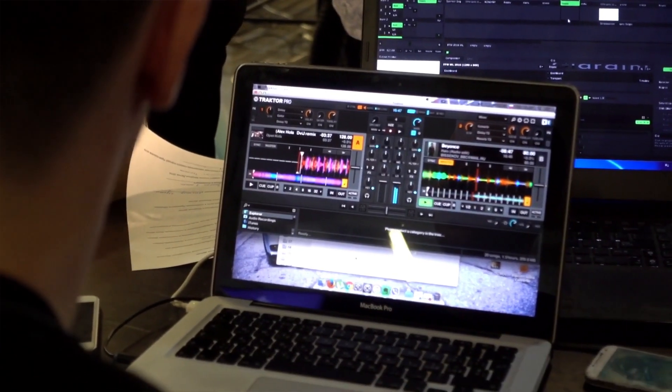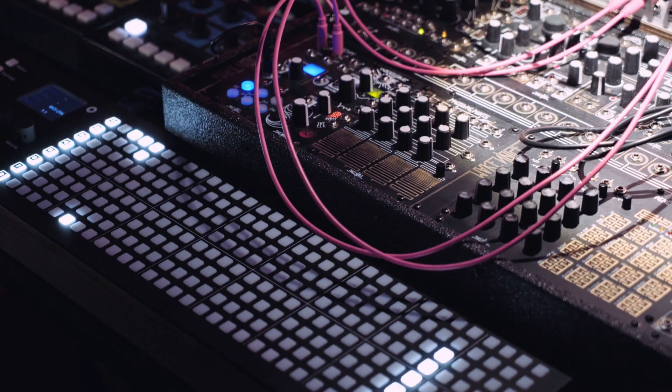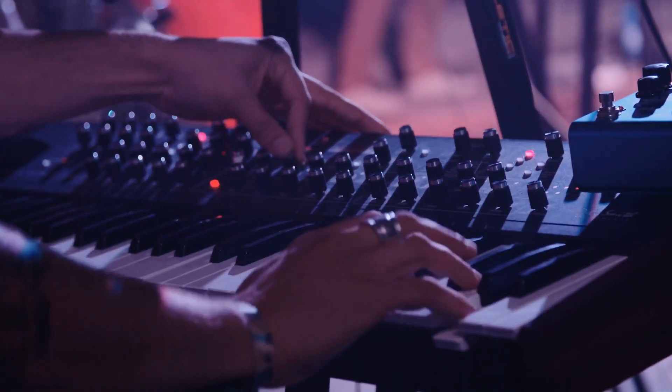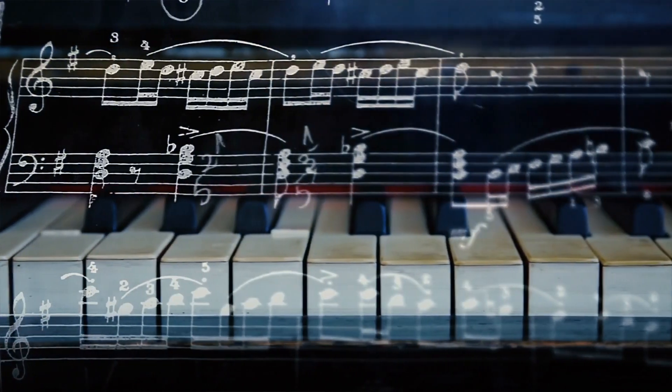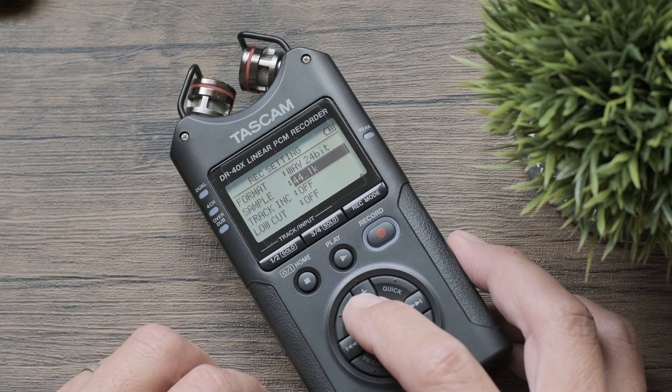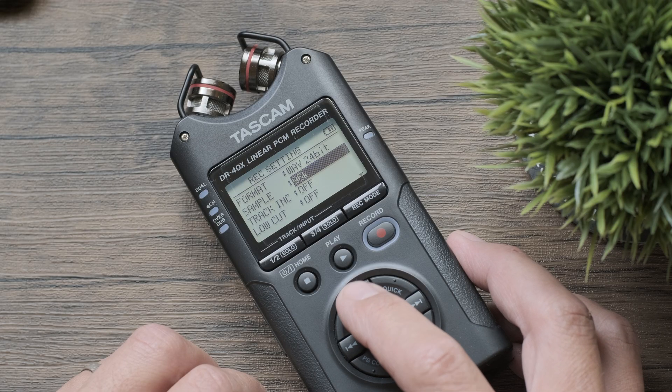So you would only need to go higher if you were sampling sounds containing high frequencies and planning on playing them back at a lower pitch using a synthesizer, for example. This could bring the previously inaudible aliasing into the human hearing range. In this case, you'd want to give yourself more room for manipulating the samples by choosing a higher sample rate.